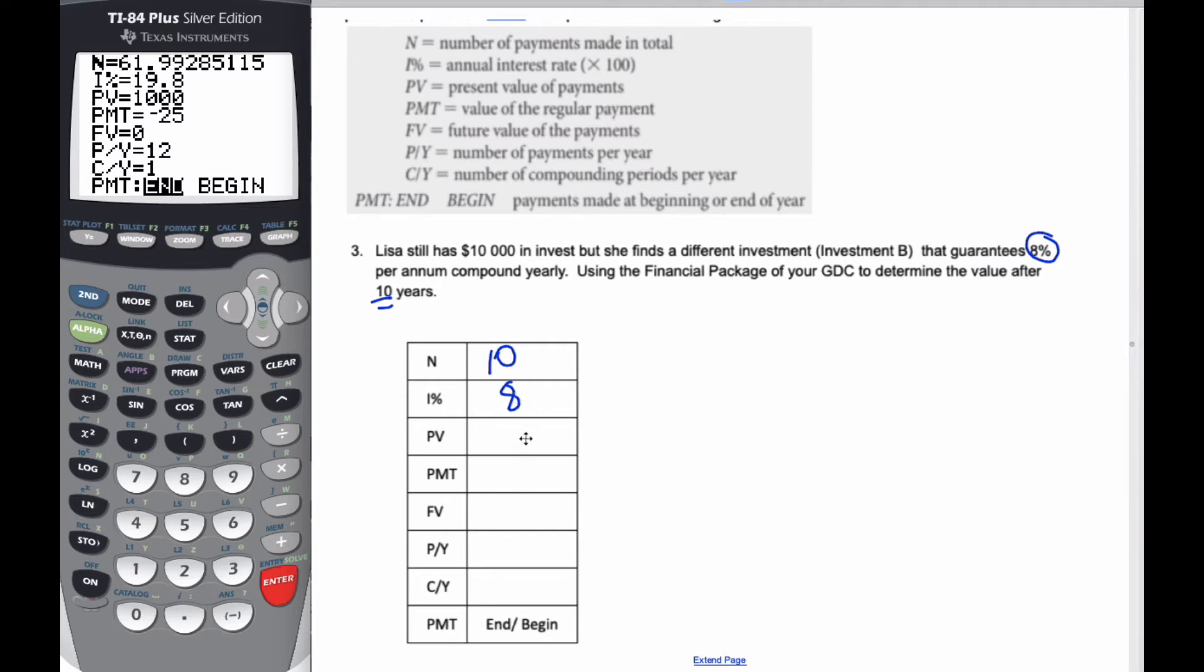Now, these ones here are kind of the tricky part. The present value is, well, the value of the investment is $10,000. That's the value. But if you think about it, it left my pocket to go to the bank for the investment.